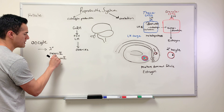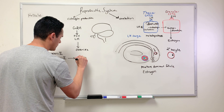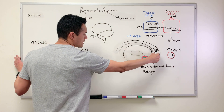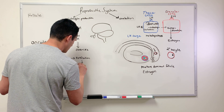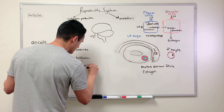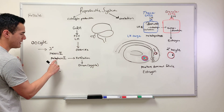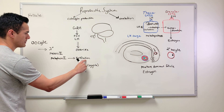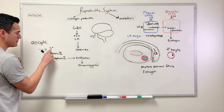Meiosis 2 is not going to be completed unless fertilization happens. Fertilization is when the sperm cell penetrates the secondary oocyte and we form an ovum, also known as a zygote. So the secondary oocyte remains stuck at metaphase 2 unless fertilization occurs.